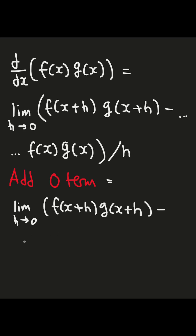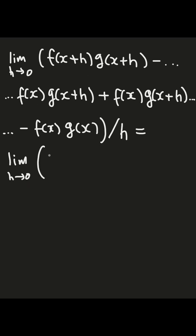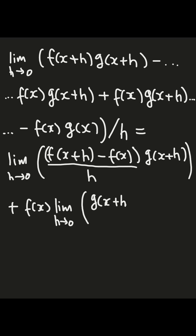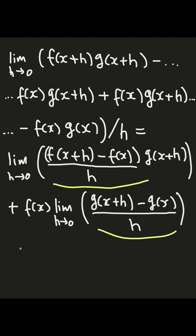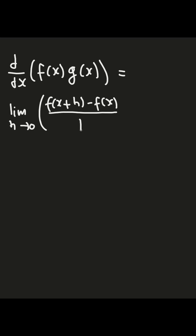Next, we add a zero term: f(x) multiplied by g(x+h) minus itself, which cancels to zero. This allows us to split the expression, and as a result we get a form we recognize as the definition of the derivative for both g and f.